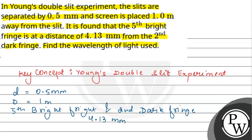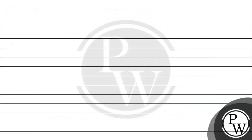We have to find the lambda value — the wavelength of the light used. The 5th bright fringe position is x5.